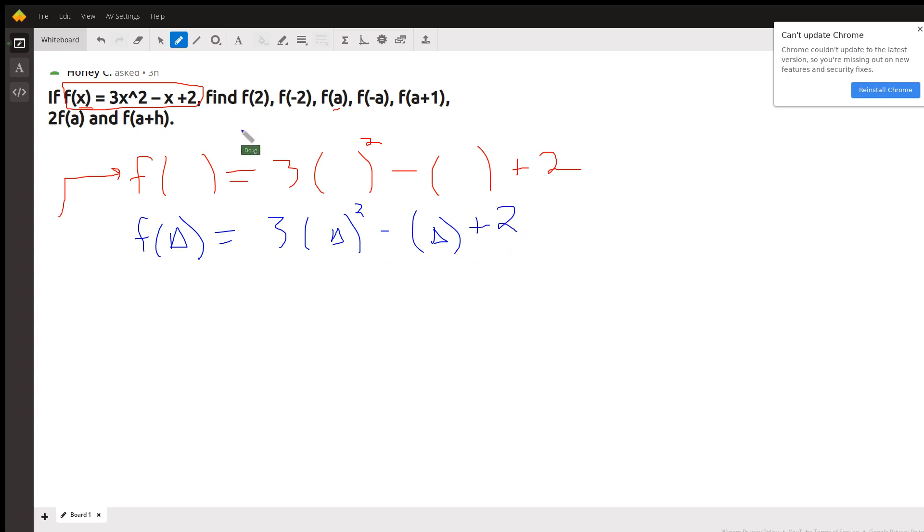For example, let's say you had to do f of a plus 1. Here's the definition: f of something equals 3 times something squared minus the something plus 2. What goes in the parentheses? A plus 1.